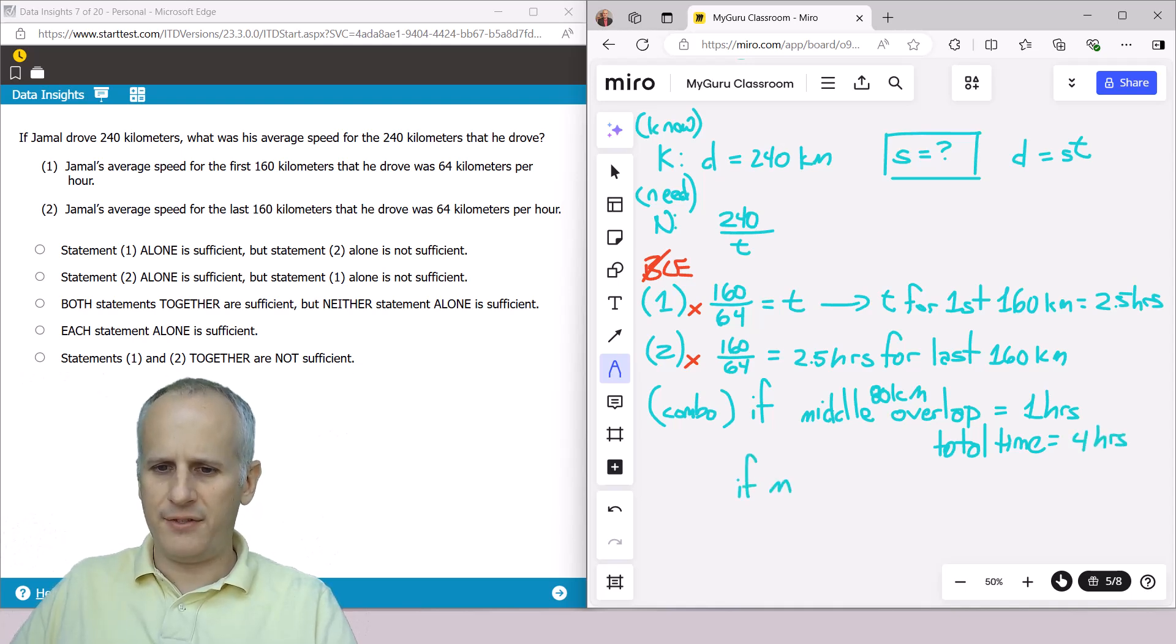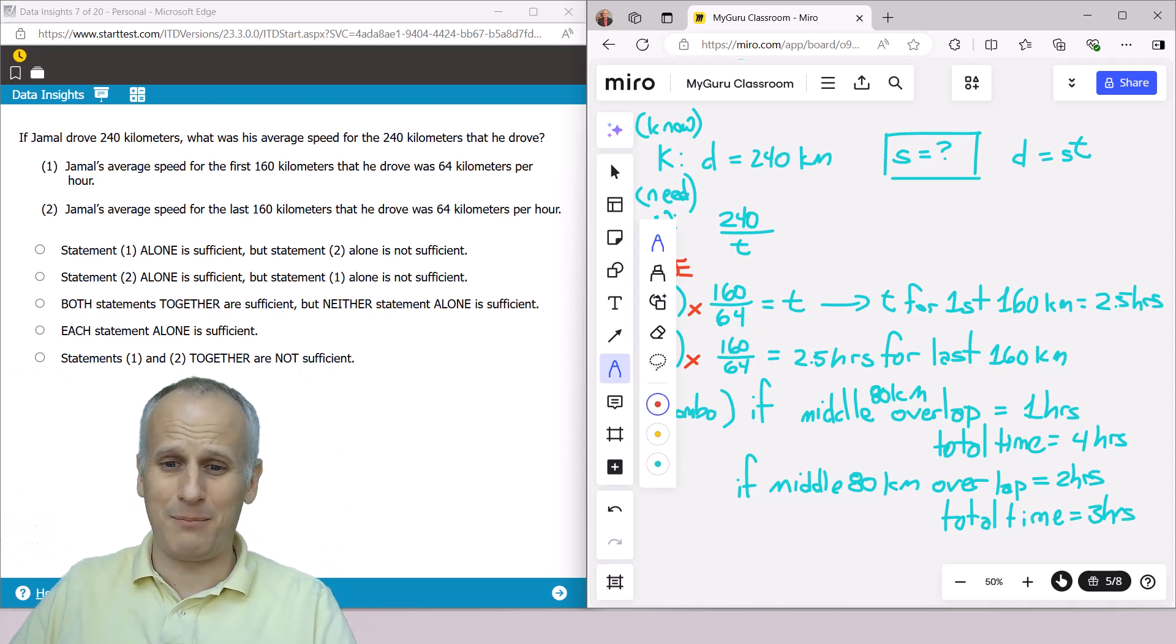But if that middle 80 kilometer overlap was equal to two hours, which it certainly could be, well then it's just two hours plus a half hour for the beginning and a half hour for the end, the total time is going to be equal to three hours. So we've got two different possibilities, and really a whole lot more than that even. Which means that the combo isn't sufficient either, and our correct answer is choice E.